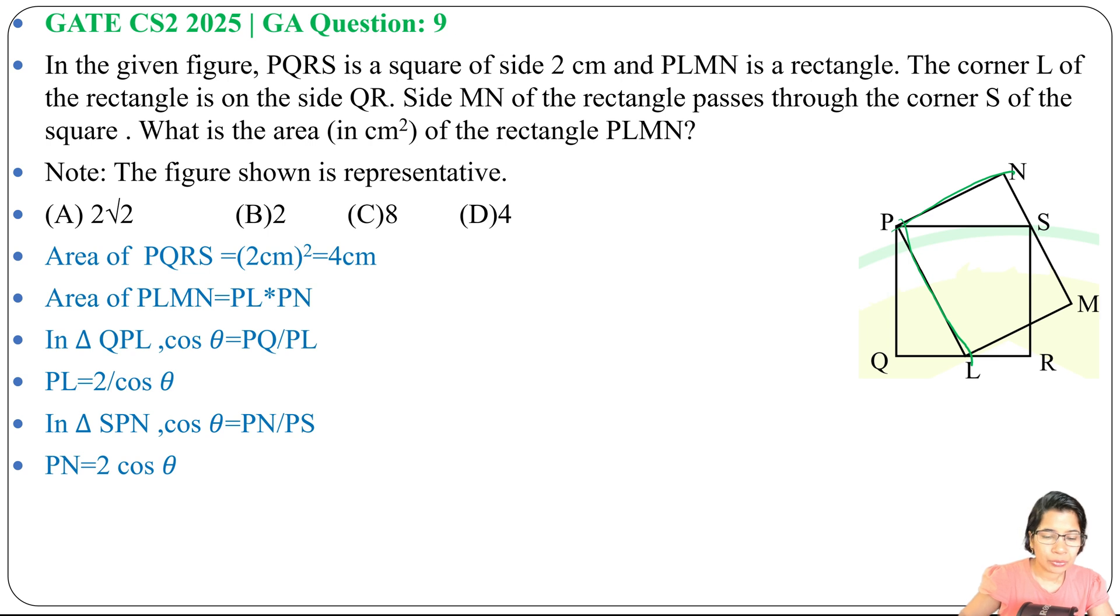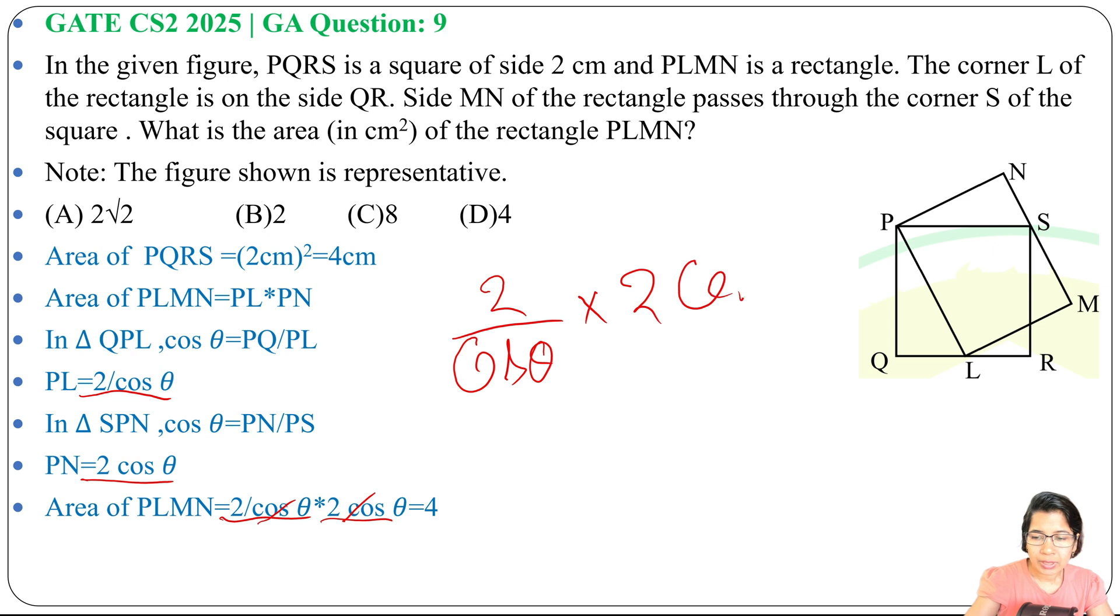PL value equals 2 divided by cos theta, PN equals 2 multiplied by cos theta. 2 divided by cos theta multiplied by 2 cos theta. So this cos theta will be cancelled, 2 multiplied by 2, it's 4.